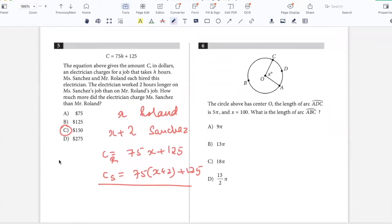The circle above has center O. The length of arc ADC is 5 pi and X is 100. What is the length of arc ABC? This angle is 100, so this angle will be 260 because it's 360 minus 100. The ratio of arc ADC to arc ABC will be in the same ratio as 100 to 260. ADC is 5 pi, so let arc ABC be X. 5 by X equals 100 by 260, so X is 13 pi. Option B.